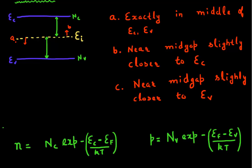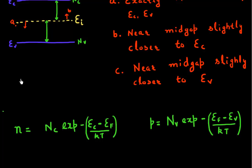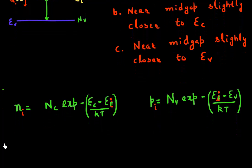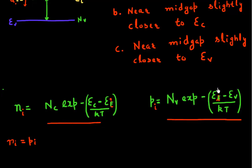One more piece of information: this is an intrinsic semiconductor. So we use subscripts ni and pi, and replace EF with Ei. We know that ni equals pi — the number of electrons and holes are equal in an intrinsic semiconductor. So we can equate these two expressions to find where Ei is located.